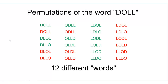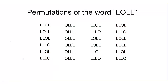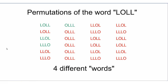Now let's see what happens when we change the D in DOLL to another L to make LOLL. When all arrangements are written out, a lot of them are repeated. Counting only the original ones, there are just four unique permutations of the word LOLL.